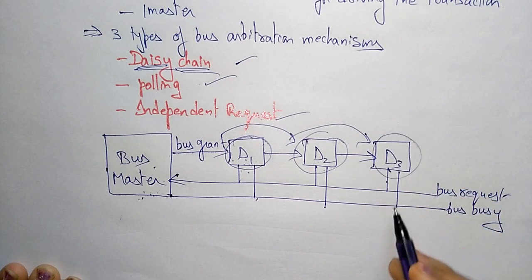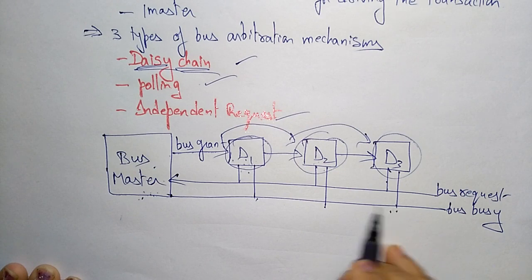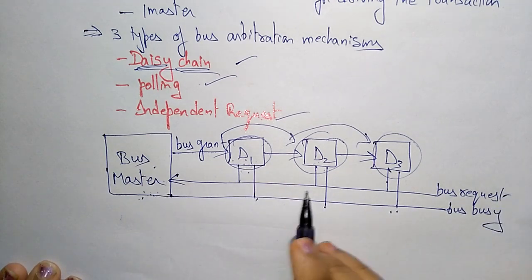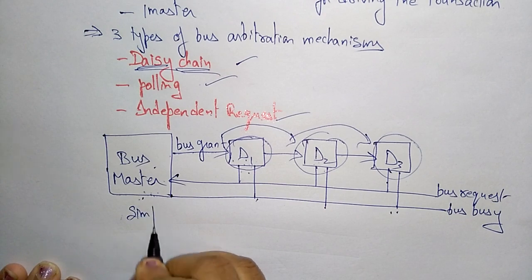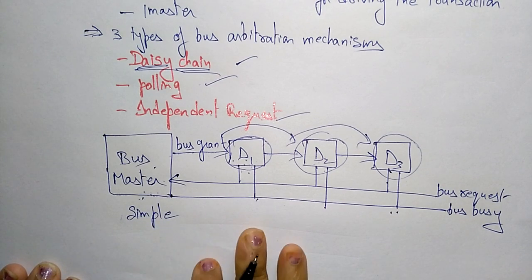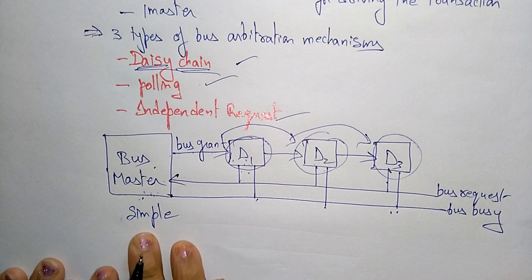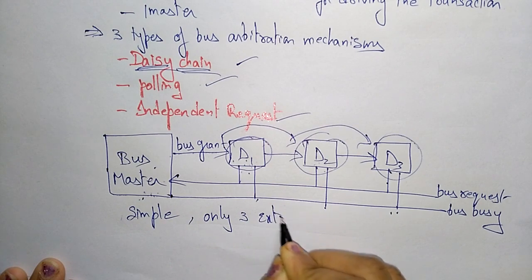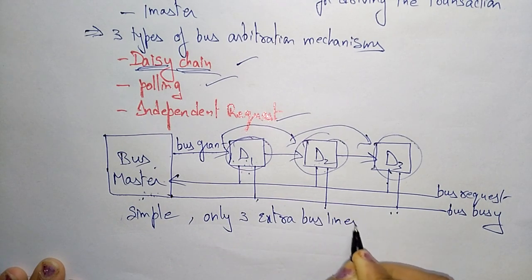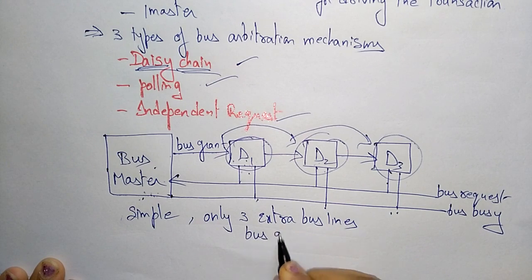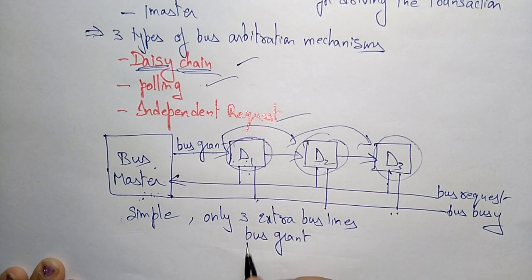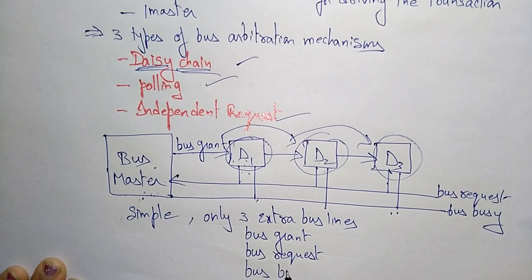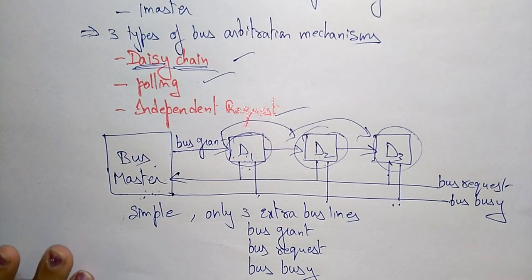This is how daisy chain arbitration works — one device after another. The advantage is that it is very simple. Only three extra bus lines are used: bus grant, bus request, and bus busy.